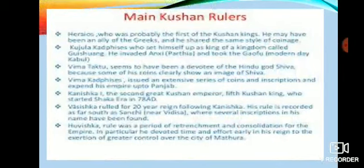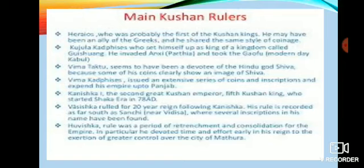Kanishka was the second great Kushana emperor, who started the Shaka Era in 78 AD. Kanishka ruled for 20 years and his rule is recorded as far south as Sanchi, where several inscriptions in his name have been found. His reign was a period of consolidation for the empire; in particular he devoted time and effort to extending greater control over the city of Mathura.